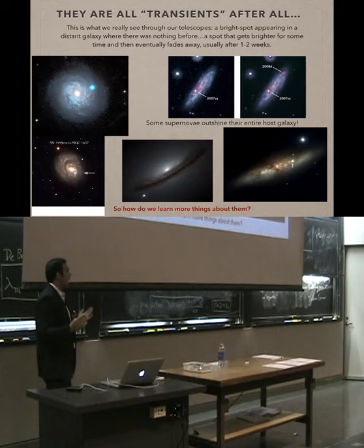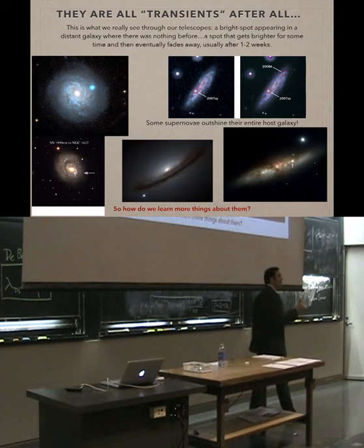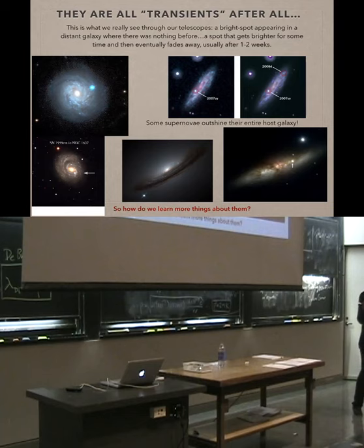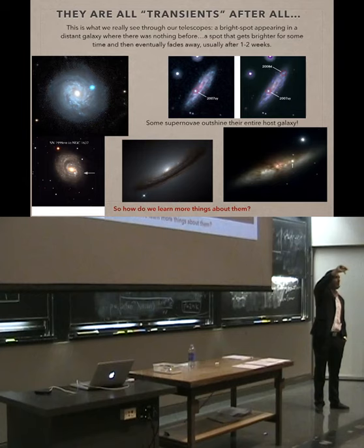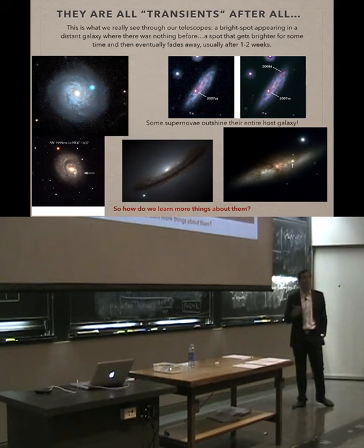In the end of the day, they're all transients. There's a whole discipline in astrophysics we call transient astrophysics — it's all about phenomena that occur for a certain amount of time and then go away. A supernova is such an example: when a supernova takes place, you will see a spot in the sky getting brighter and brighter, and then it starts getting cooler and dimmer until you can't see it anymore. It lasts for about one or two weeks, depending on the supernova.